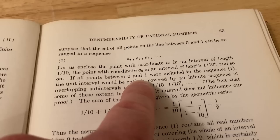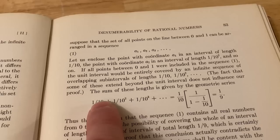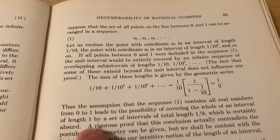And then he says, if all of them between zero and one were included in this sequence, the unit interval would be entirely covered by an infinite sequence of overlapping subintervals of length 1 over 10, 1 over 10 squared, 1 over 10 cubed, etc. The fact that some of these extend beyond the unit interval does not influence our proof. And then if you look at the sum of these lengths, you get 1 over 9, and that's impossible, right? Because thus the assumption that the sequence contains all real numbers leads to the possibility of covering the whole of an interval of length 1 by a set of intervals of total length 1 over 9, which is certainly absurd. Yeah, just really, really beautiful.